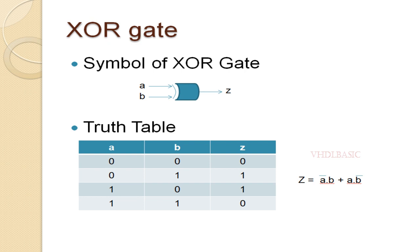Looking at the XOR truth table: when A and B have the same value, output Z will be 0. If A and B have different values — like A is 0 and B is 1, output Z will be 1; likewise when A is 1 and B is 0, output Z will also be 1. Notice that whenever A is 0, B will be assigned to output Z. The Boolean expression of the XOR Gate is: Z equals A-bar dot B plus A dot B-bar.